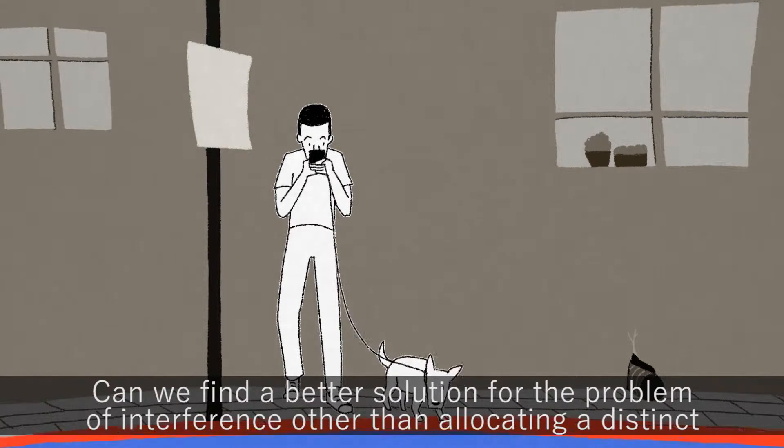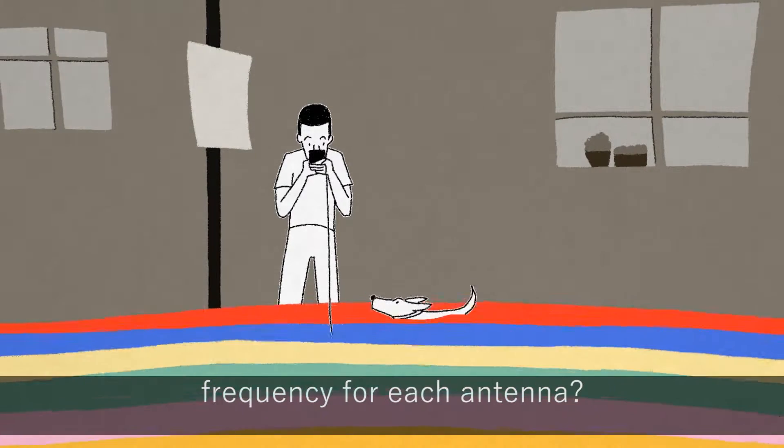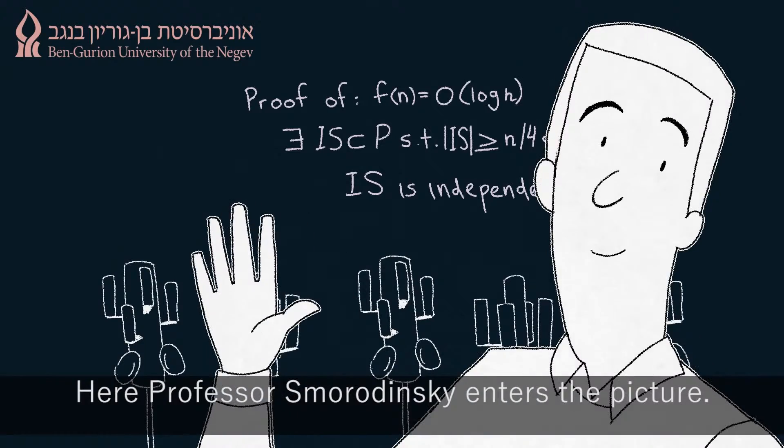Can we find a better solution for the problem of interference, other than allocating a distinct frequency for each antenna? Here, Professor Smordinsky enters the picture.